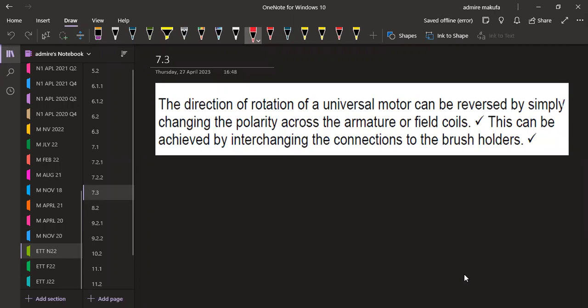The direction of rotation of a universal motor can be reversed by simply changing the polarity across the armature or field coils. This can be achieved by interchanging the connections to the brush holders.